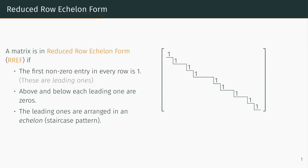In the example to the right, the leading ones are arranged in an echelon pattern. Below the echelon, there can only be zeros. Above the echelon, there might be non-zeros, since not every position above the echelon is above a leading one.